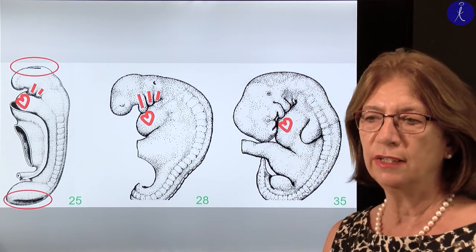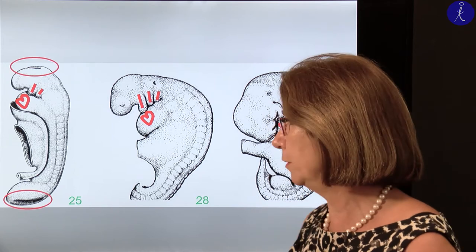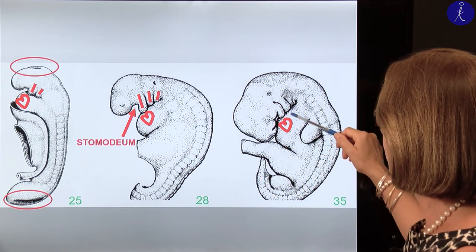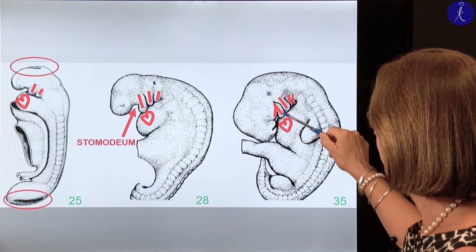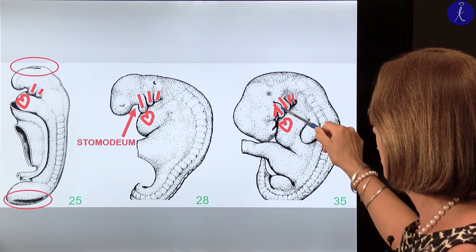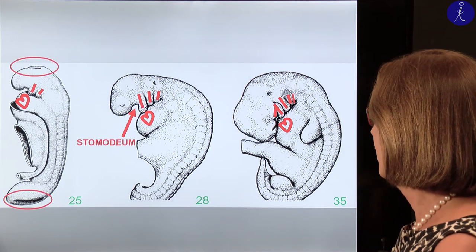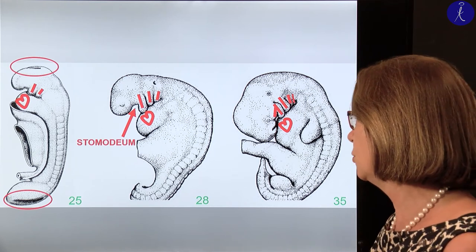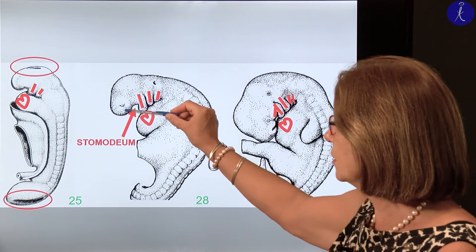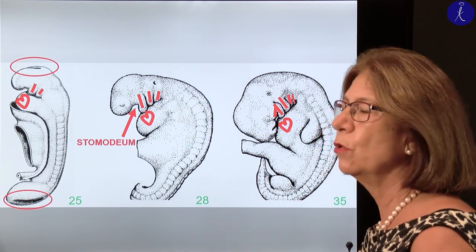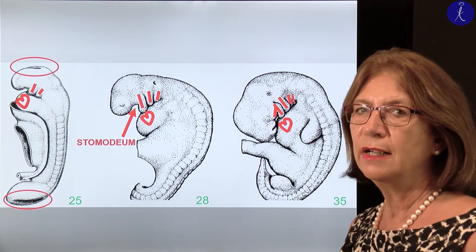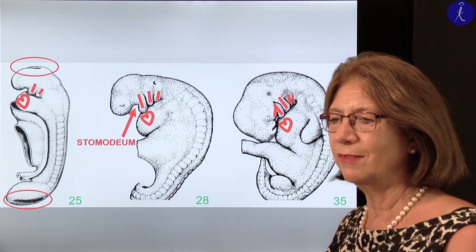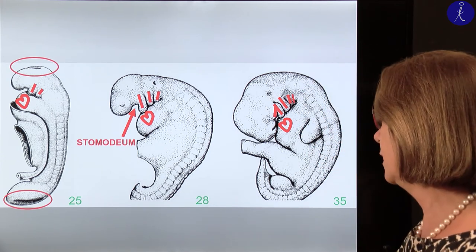About these processes you heard already in connection with the development of the face — because the frontal process and the first pharyngeal arch, which will divide into the mandibular and the maxillary process, together will give the basic structure of the face. These processes border a cavity which we call the stomodeum — the primitive oral cavity. Later this will be united first with the nasal cavity, and then divided again by the palate from the nasal cavity.